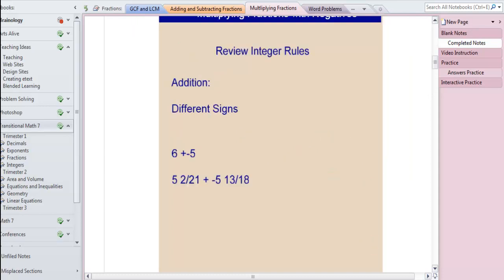With different signs and adding, we always subtract the numbers and keep the sign of the larger. So in this next example of adding fractions that have different signs, we're actually going to subtract and keep the sign of the one we have more of.